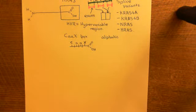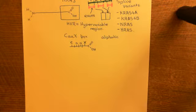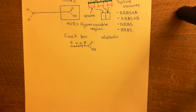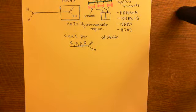Welcome to this next video in which we are discussing the RAS proteins. We've just discussed the four different RAS proteins which are produced by the three different RAS genes. Now what we want to discuss is the first thing which is going to happen to these RAS proteins after they've been produced, which is that they're going to be farnesylated.